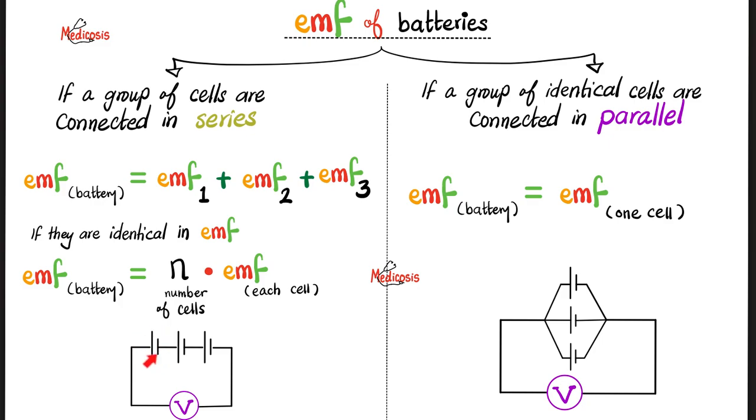Example, let's suppose that this is 1.5 volts, this is 1.5 volts, and this is 1.5 volts. What is the oomph for the entire battery? Well, the electromotive force for the entire battery equals 1.5 plus 1.5 plus 1.5 equals 4.5 volts, because electromotive force is a voltage. It is measured in volts.